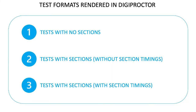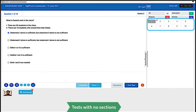We will now learn about sections and understand how to use section buttons. There are three kinds of tests rendered by DigiProctor: tests which do not have any sections, tests that have sections but no individual section timings, and tests which have sections where each section has an allotted section time. This is how the browser interface looks for a test that has no sections.